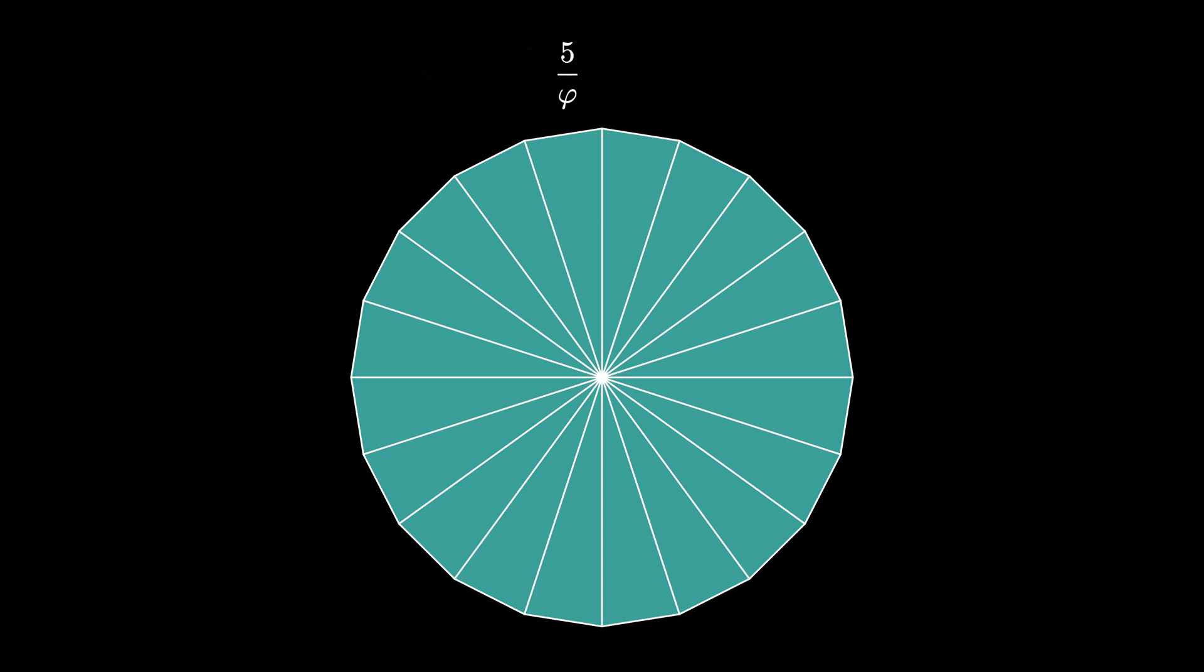But we can say more from this. The icosagon sits entirely inside the unit circle, and the unit circle has an area of pi times 1 squared, or pi. That means that 5 divided by the golden ratio is less than pi, so that 5 is less than pi times the golden ratio.